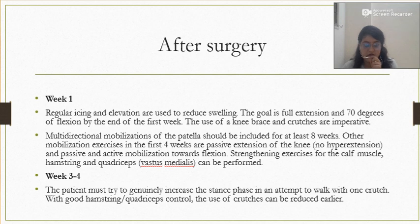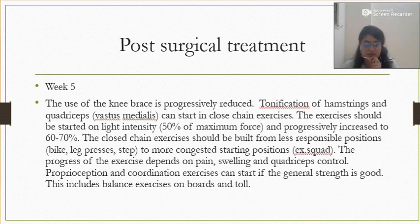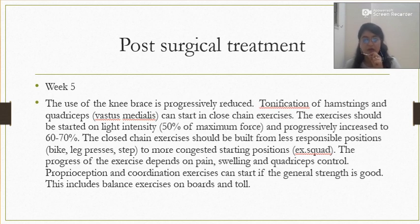For weeks 3 and 4, the patient should try to increase their stance phase in an attempt to walk with one crutch. With good hamstrings and quadriceps control, use of crutches should be progressively reduced. As quadriceps and hamstrings strength improve, the buckling effect will go away and the patient can wean off the crutches. At week 5, the use of the knee brace is progressively reduced. Tonification of hamstrings and quadriceps can start in closed kinetic chain exercises. Mini squats or lunges to the middle range can be performed — not deep squats — and any closed chain exercise involving deep-range knee flexion should not be done at this stage.